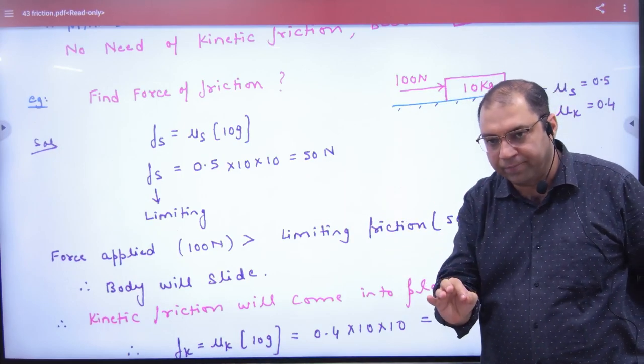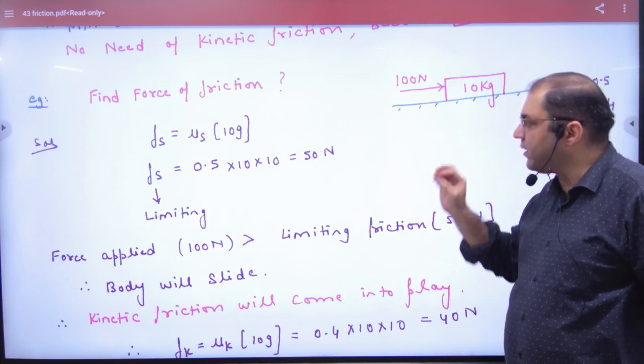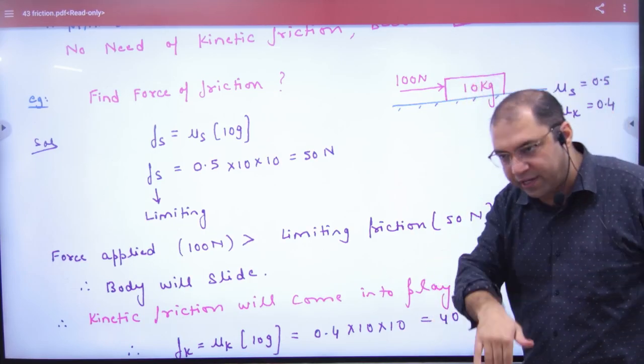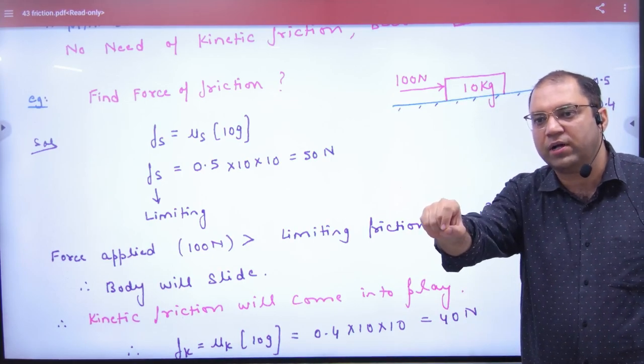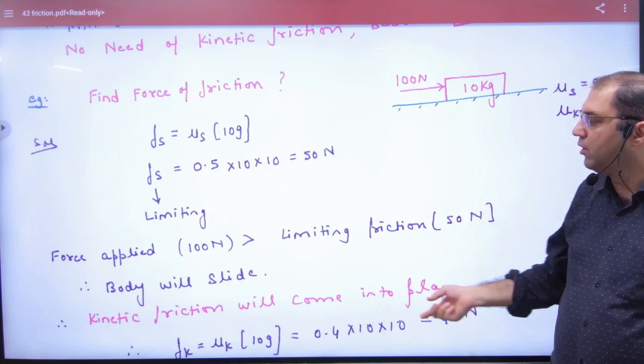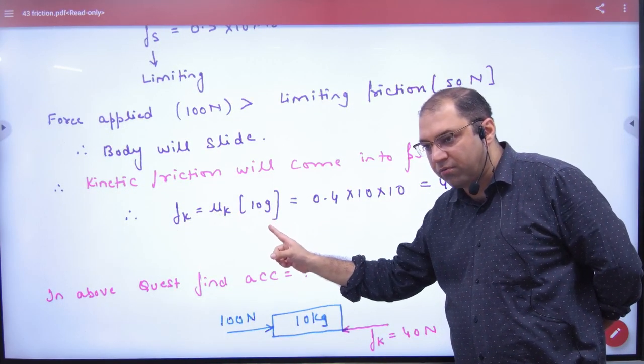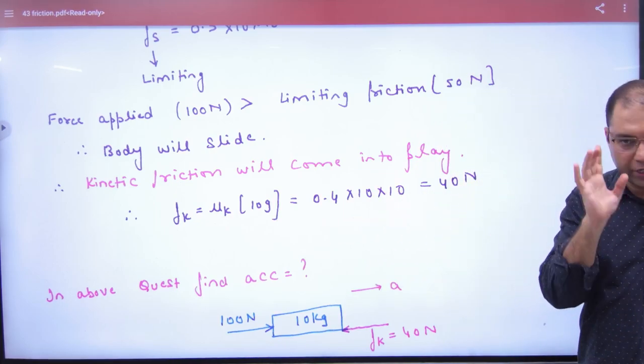Limiting and maximum static. For this body, you need to move the force of 50 N. You have put 100 N to the body, it will move. Which friction will be the answer? Kinetic. I will ask what is force of friction? Kinetic friction mu k into normal reaction. What will be the answer? 40 N.